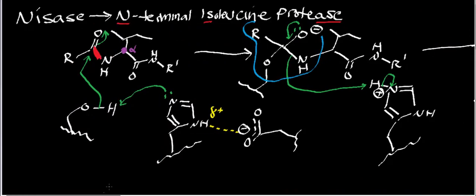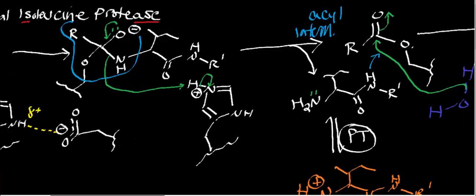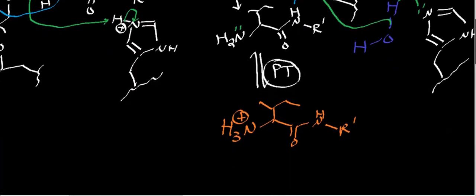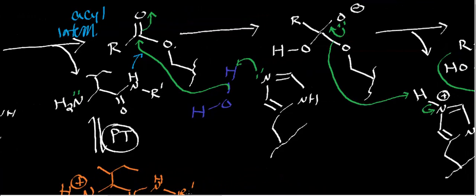NiceAce targets isoleucine residues. You find the alpha carbon at the isoleucine and look at the N-terminal peptide bond, since the enzyme is an N-terminal isoleucine protease. The first step is deprotonation of serine, nucleophilic attack, and generation of the tetrahedral intermediate. The pi bond reforms and kicks off the amine — which carries the isoleucine-containing fragment — and the amine undergoes proton transfer with water to give the form seen at physiological pH.